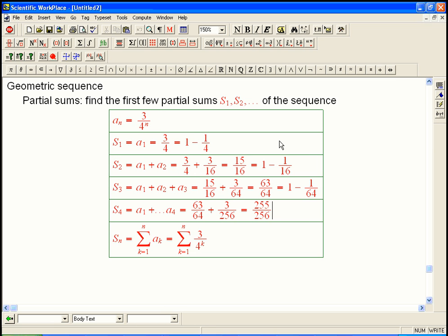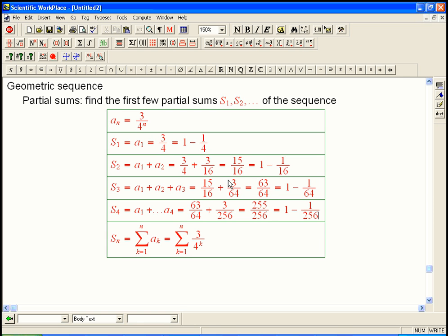These are all just 1 minus 1 over, and these numbers are exactly these powers of 4 that we're appearing here. So it seems like that looks like it's going to have a general formula of 1 minus 1 over 4 to the, well, whatever n was. If the sum is up to 4, it looked like we were getting that 4 to the 4th, so it looks like 4 to the n.